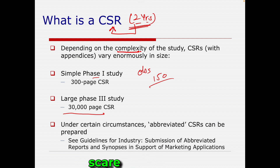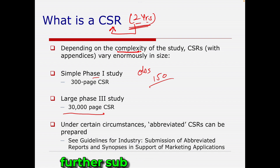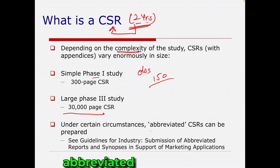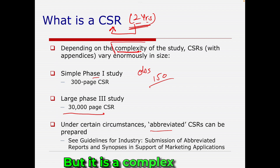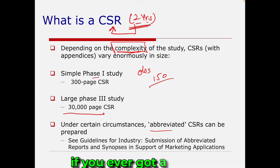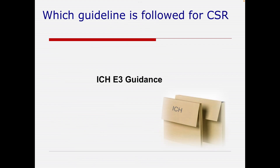Some studies have multiple sub-studies, and each sub-study may require two or three separate CSRs. Sometimes an abbreviated CSR is also required. In short, a CSR can be small or very large, but it is always a complex document. If you are a medical writer and you ever get a chance to work on CSR writing, it is going to be the best experience.